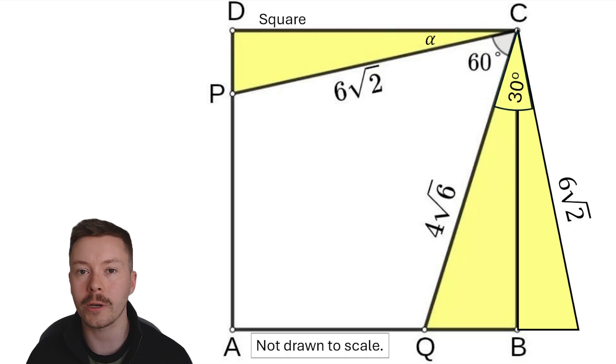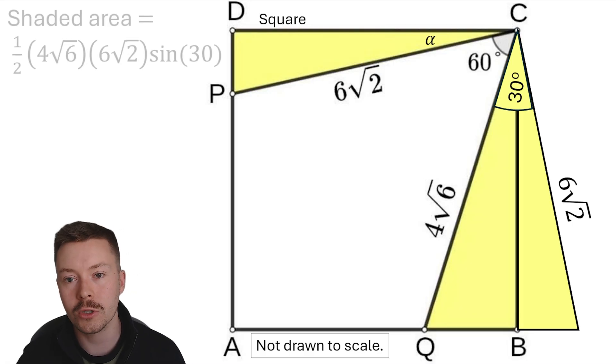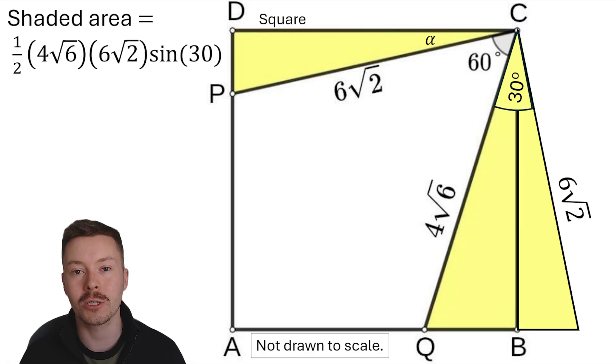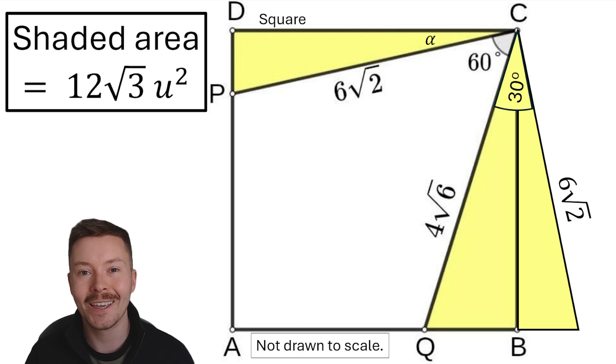Then we've got the triangle again, 4 root 6 on one side, angle of 30 degrees between the two sides, and 6 root 2 on the other side. We can work out the total shaded area again by doing a half AB sine C with the same values, a half 4 root 6, 6 root 2, and sine 30, giving us a total answer of 12 root 3 units squared.